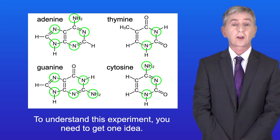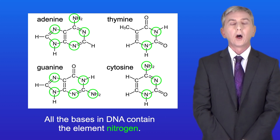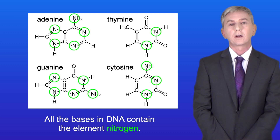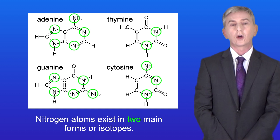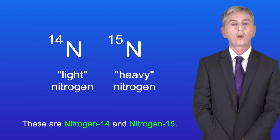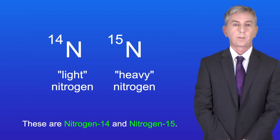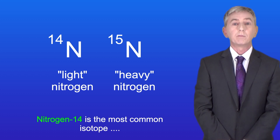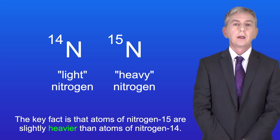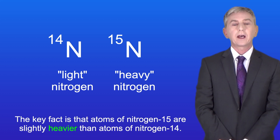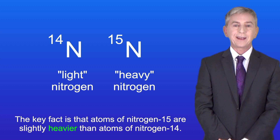To understand this experiment you need to get one key idea. All of the bases in DNA contain the element nitrogen, and nitrogen atoms exist in two main forms or isotopes: nitrogen-14 and nitrogen-15. Nitrogen-14 is the most common isotope, with over 99% of nitrogen atoms being nitrogen-14. The key fact is that atoms of nitrogen-15 are slightly heavier than atoms of nitrogen-14.